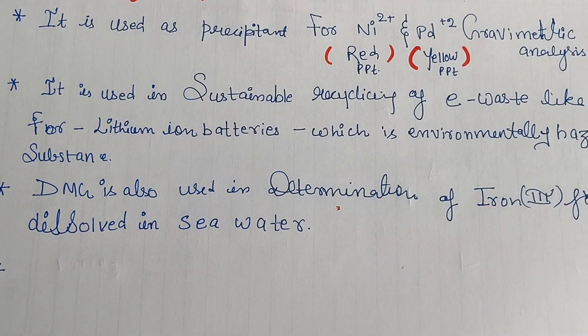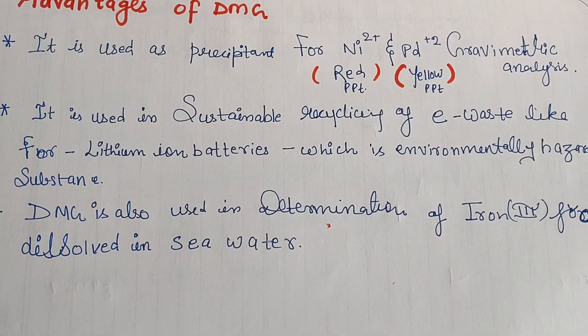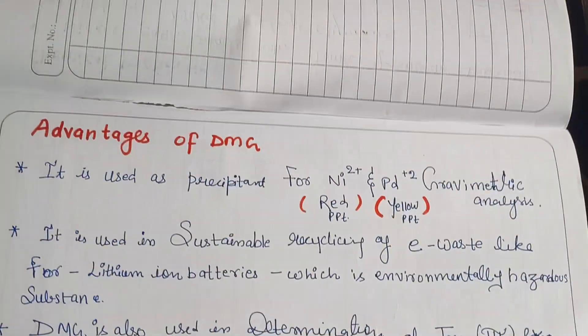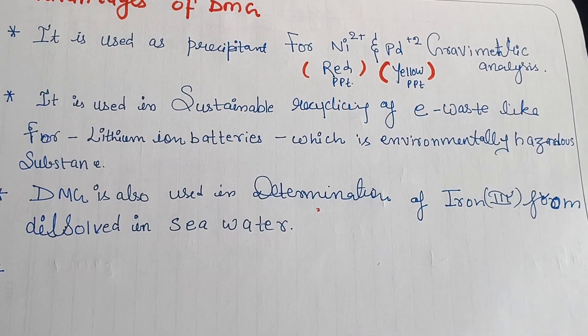It is also used in determination of iron dissolved in sea water. These are the main uses of dimethyl glyoxime.